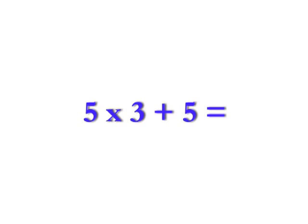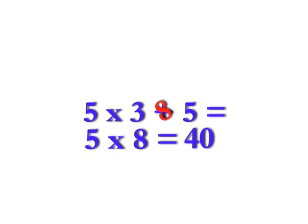If you had the same sentence, 5 times 3 plus 5, but accidentally didn't follow PEMDAS and did addition first, you'd add the 3 plus 5 to get 8 and then multiply 5 times 8, which is 40, which isn't the correct answer to the sentence. That's why PEMDAS is so important.